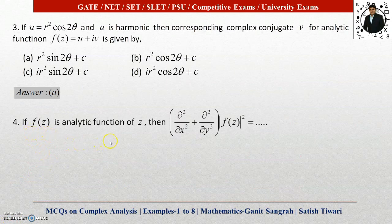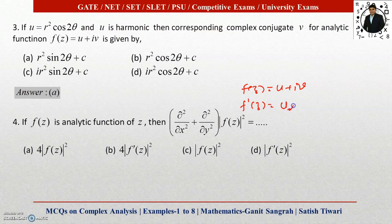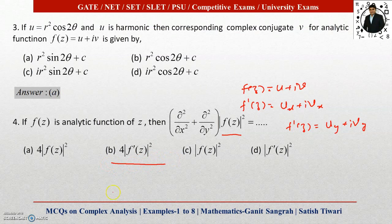Next, question four: if f(z) is an analytic function of z, then (∂²/∂x² + ∂²/∂y²)|f(z)|² equals which of the four options? Since we are differentiating |f(z)|², the answer must contain a derivative of f(z) — so options with f(z) alone (A and C) are eliminated, leaving B or D. Knowing that f(z) = u + iv and f'(z) = u_x + iv_x, the standard result is that the answer equals 4|f'(z)|², so option B is correct.